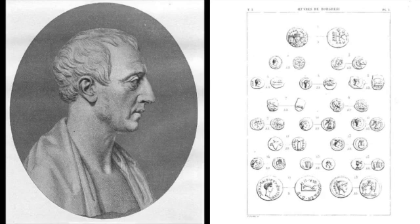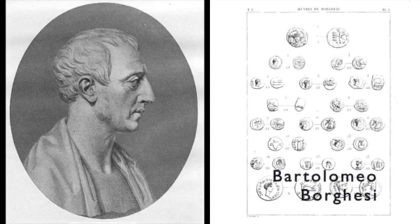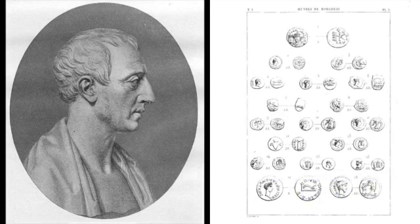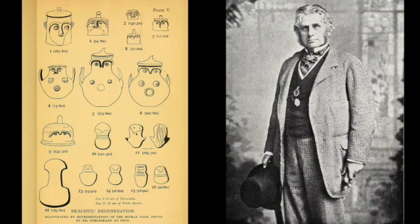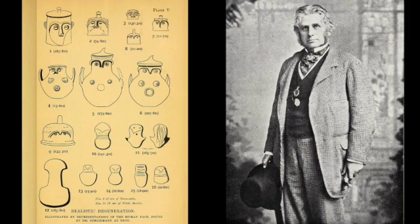Archaeological seriation has pretty deep roots that go well back into the 19th century. Possibly as early as 1820, the antiquarian Bartolomeo Borghese was using a simple version of seriation to determine the chronology of ancient Roman coins found in coin hoards. In the mid-19th century, Augustus Henry Lane Fox Pitt Rivers, best known for his contributions to archaeological field methods, also made contributions to seriation.